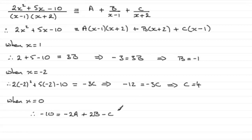Now we know our values for b and c, so we can put them into this equation. So if we do that, we've therefore got minus 10 equals minus 2a. We know that b is minus 1, so that's going to be minus 2. We know that c is 4, so we're going to have minus 4.